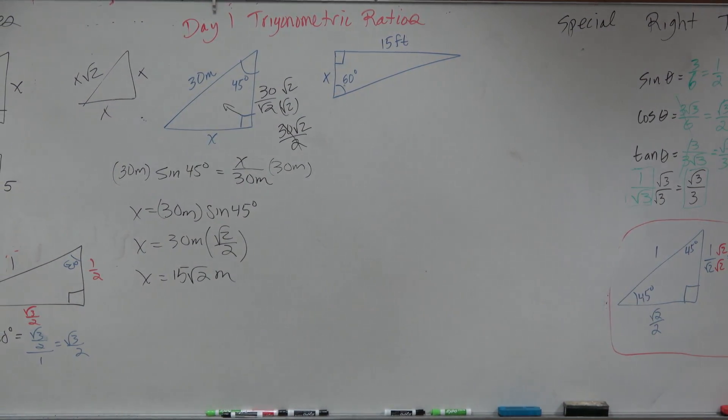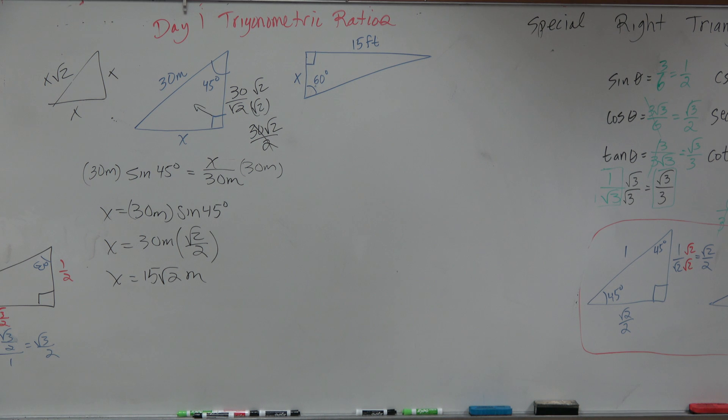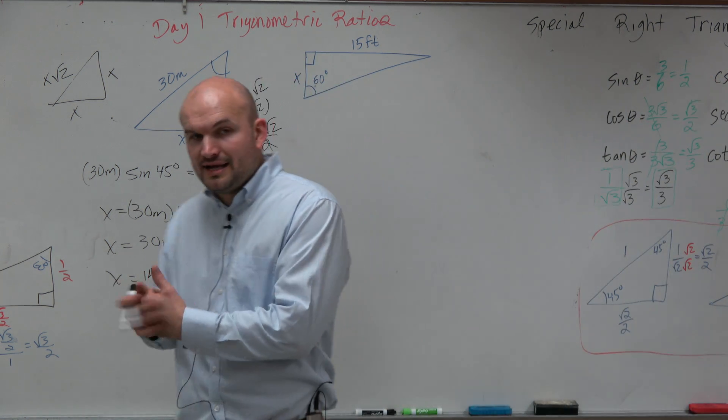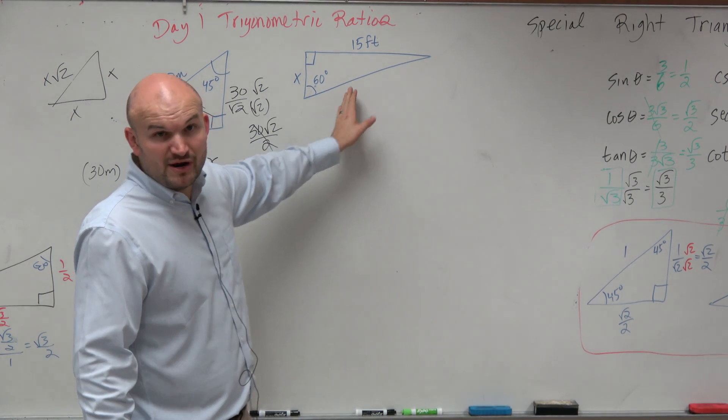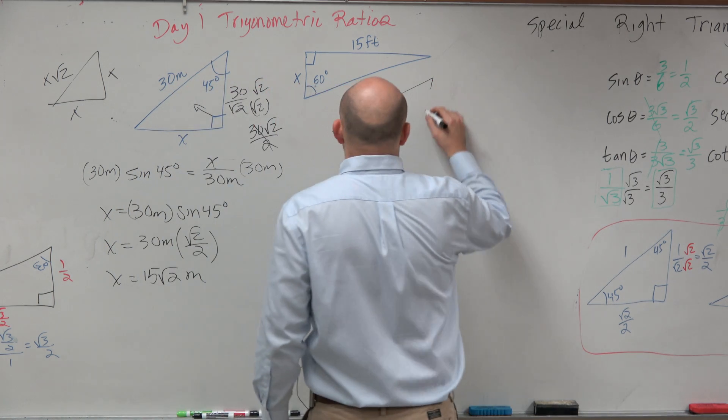All right. So on this next example, again guys, knowing our trigonometric ratios, if we have 60 degrees, I could quickly just go ahead and look at this and say, all right, well, if this is my short leg...